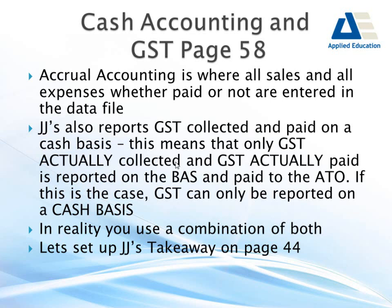JJ's reports GST collected and paid on a cash basis, meaning only GST actually collected and GST actually paid is reported on the BAS. We remit the difference to the ATO. In reality you use a combination of both. If you've entered a $500 invoice it'll sit under purchases, but the reports you pull will be for cash, not accrual. If you pull accrual you'll report incorrectly because you haven't actually paid it. Cash is better for small businesses because they might not always have the money to pay creditors.